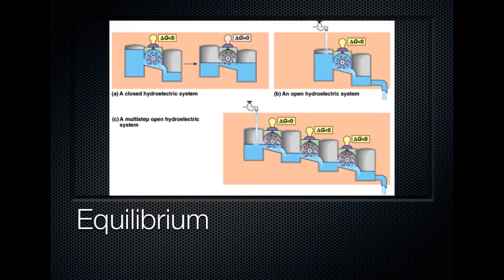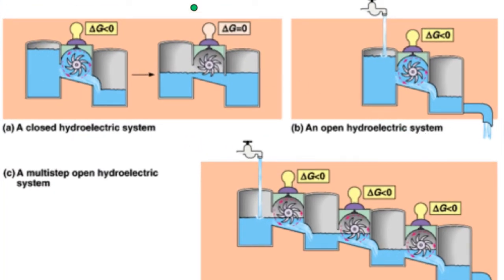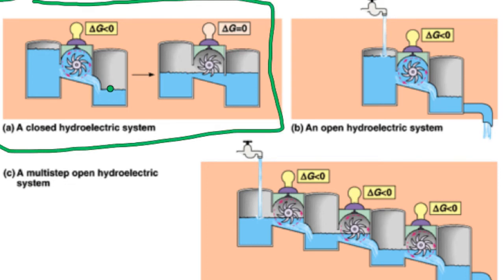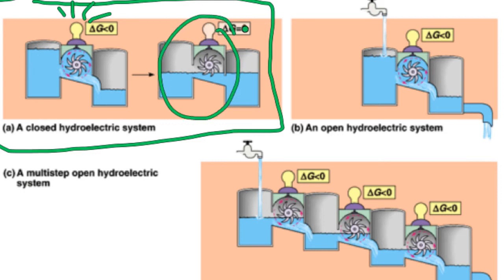Finally, we have equilibrium. Generally in life you think equilibrium is good — balanced and happy. Unfortunately, in your body, if a reaction hits equilibrium, you die. There are three pictures that illustrate why. The best one is a hydroelectric plant: water in a tower flows down through a turbine, causing a light bulb to produce light, and flows into a lower tank. The problem is that this is a closed system — nothing flowing in, nothing flowing out. Eventually the water level in both tanks evens out, water stops flowing through the turbine, and the system is dead.